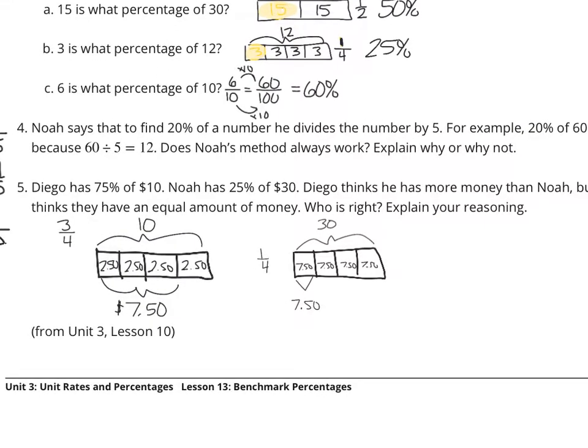And so, who is right? Well, Diego thinks he has more money. Noah thinks they have the same amount of money. So, Noah, in this question, is correct.